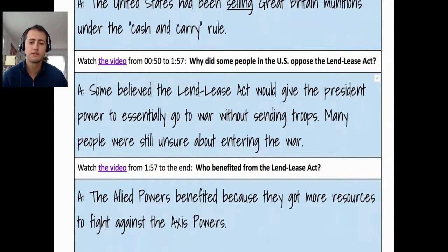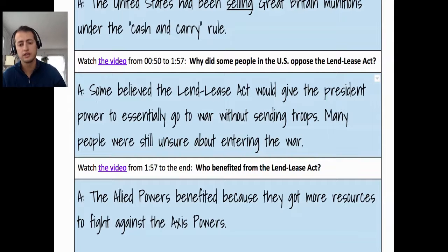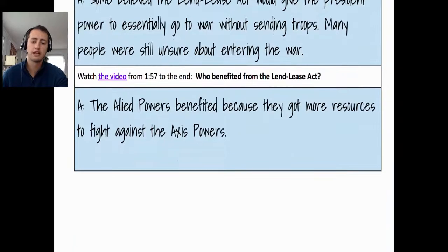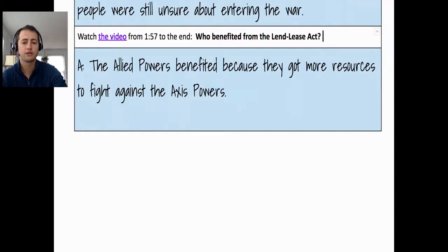Why did some people in the US oppose the Lend-Lease Act? The straightforward answer is that some people believed it would give FDR the power to go to war without congressional approval — to do all the behaviors of going to war except sending troops. People were still really unsure about whether the US should enter the war. At the end of the video, the question is who benefited from the Lend-Lease Act, and a straightforward answer is that the Allied powers benefited because they got more resources to fight the Axis powers.